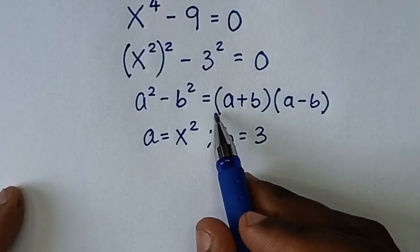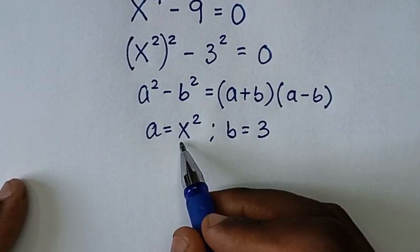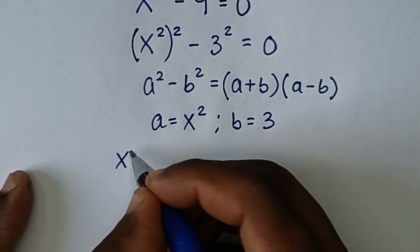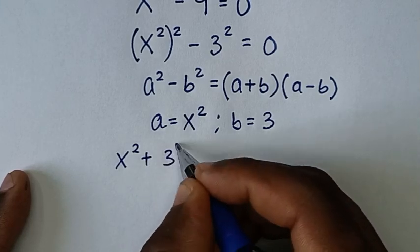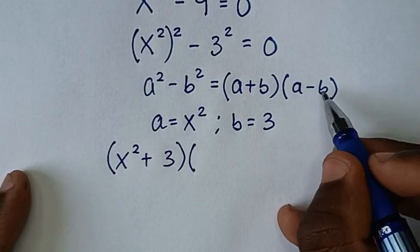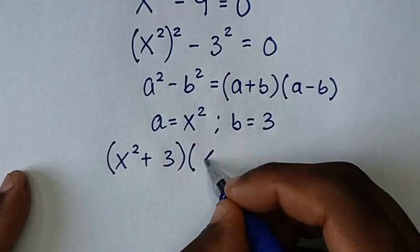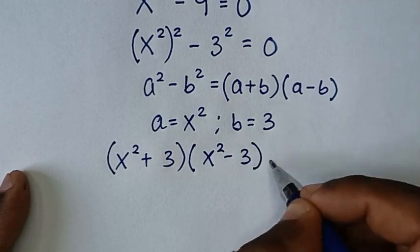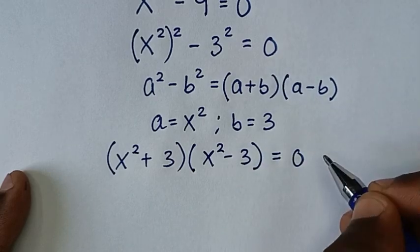Applying this form, (a + b) gives us (x² + 3), and (a − b) gives us (x² − 3), so we have (x² + 3)(x² − 3) is equal to 0.